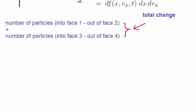Adding these two changes will equate to the total change of particle number in that volume. If we look at the dimensions of the different faces, note that the 1 and 2 faces go from x to x plus dx, and the 3 and 4 faces go from v to v plus dv.